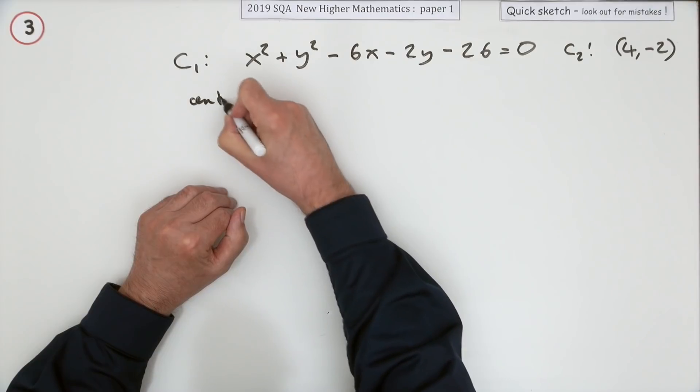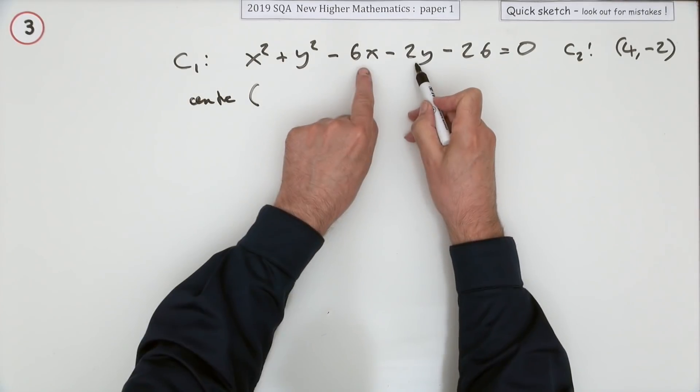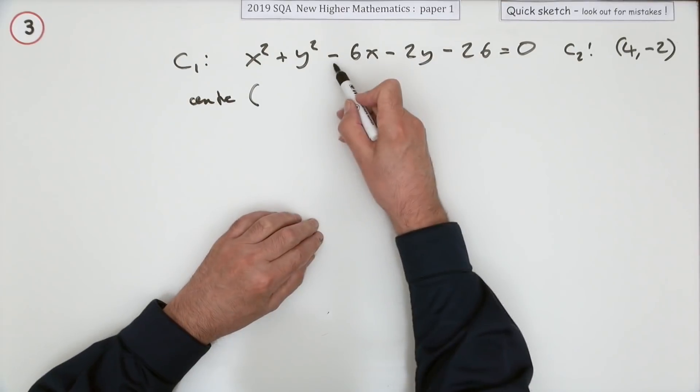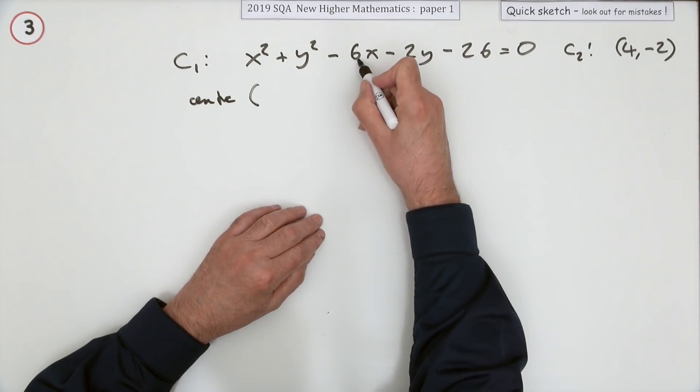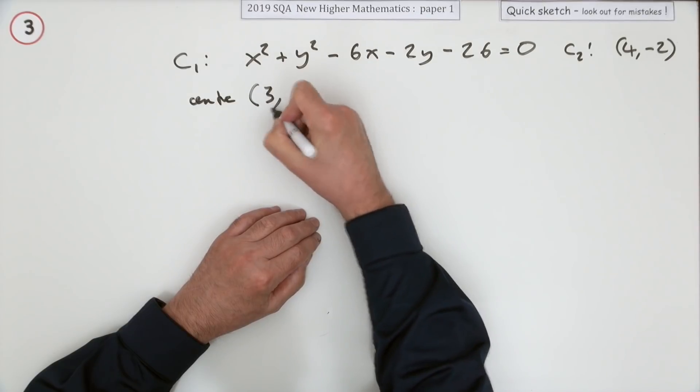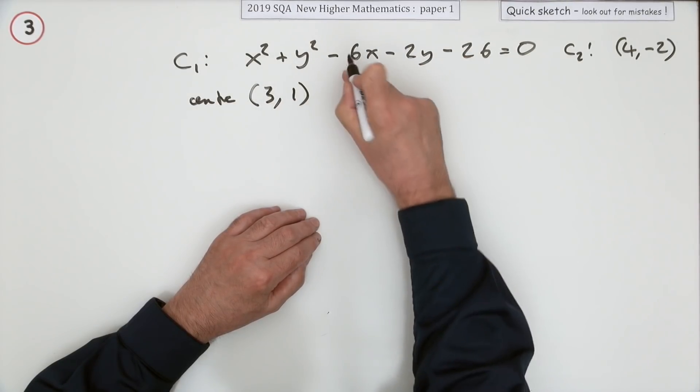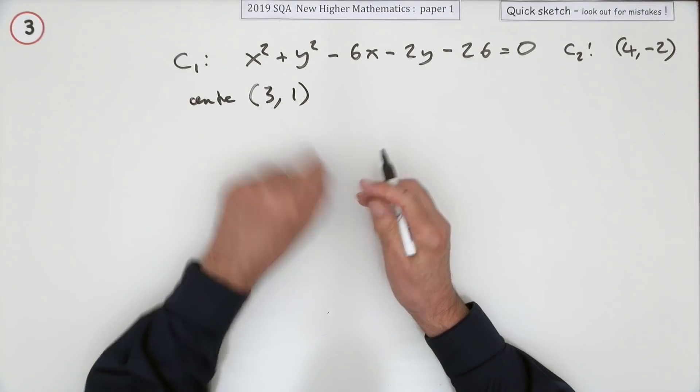So the centre of this circle would be the x and y terms. It's the opposite sign and half the numbers. So you've got half of that opposite sign is 3, half of that opposite sign is 1. The centre of that circle would have been at (3,1).